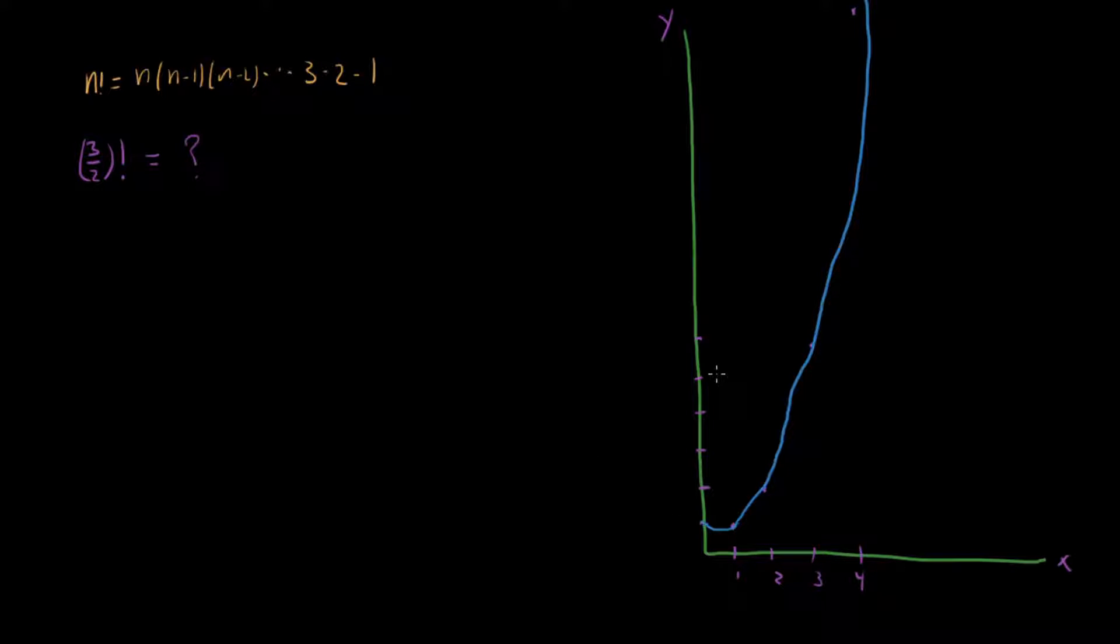And so this is certainly one way of defining the factorial function, saying that we're going to take our points that we are familiar with from the factorial function, and then we're just going to draw a curve through them. That's one way of extending the factorial function to non-integer values.